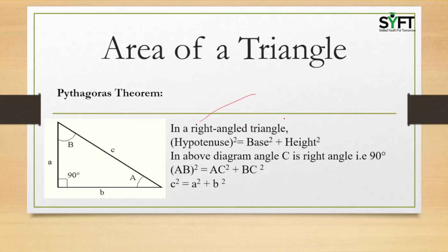In a right angle triangle, hypotenuse squared equals base squared plus height squared. In the diagram, angle C is 90 degrees, and angles A and B are acute angles. In any right angle triangle, the square of hypotenuse C equals the square of base B plus the square of A. So the formula is C squared equals A squared plus B squared. This is the Pythagorean theorem.